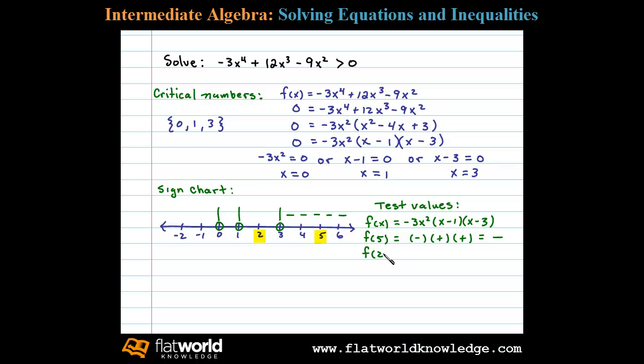Now let's test this second region. Let's choose x equals 2 and do the same thing. So f(2): in this case, -3 times 2² will leave us with a negative factor. 2 - 1 is 1, that's a positive factor. 2 - 3 will leave us with -1, or a negative factor. A negative times a positive times a negative will result in a positive number, so in that region we'll get positive results.